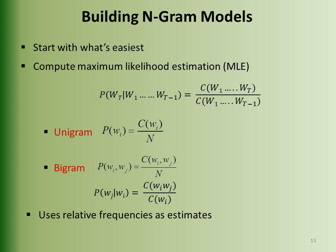What are the steps to build N-gram models? First, we start from the simplest approach: maximum likelihood estimation (MLE), where we use relative frequencies for estimates. Here are the equations of maximum likelihood for unigram and bigram. For bigram, P(Wj | Wi) shows the probability of Wj given Wi, computed as C(Wi, Wj) divided by C(Wi).